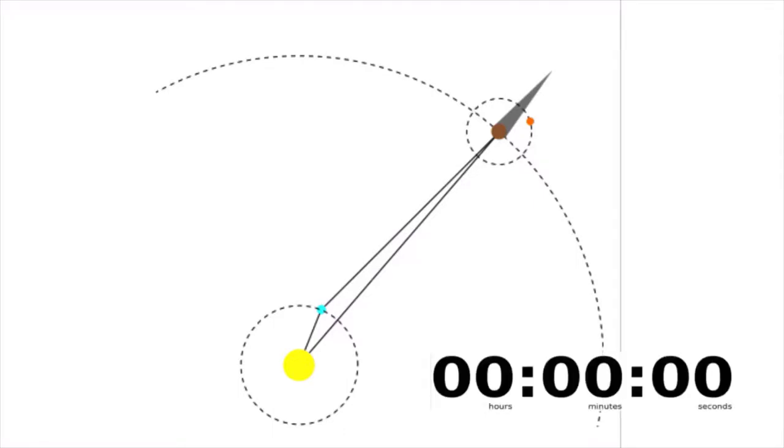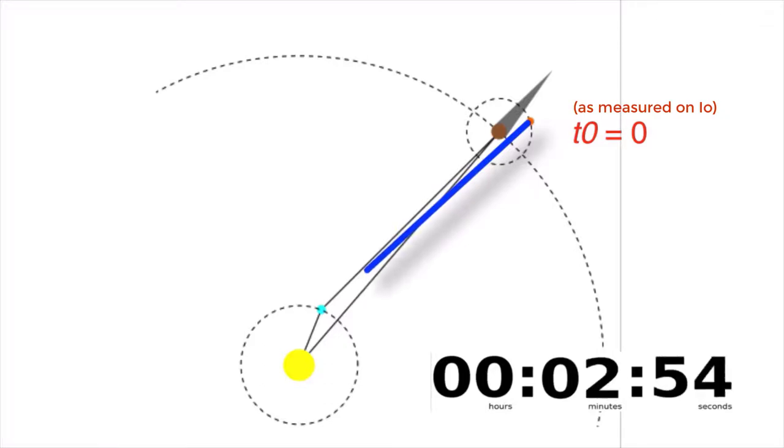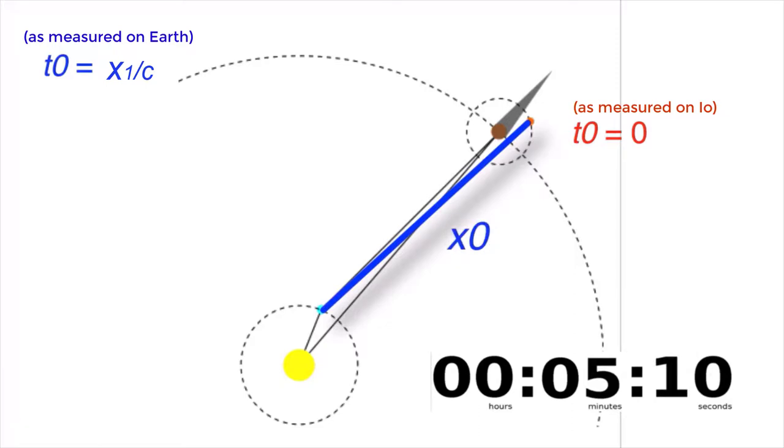When Io first disappears into the shadow of Jupiter, we start the timer on Io. t is equal to zero. But on Earth, you see Io disappear into the shadow a little bit later in time, because it takes time for the light reflected from Io's surface to reach the Earth. Earth sees the start of the orbit at this time, t is equal to x1 on c, where this term is the time that it takes for the light of Io to reach Earth.